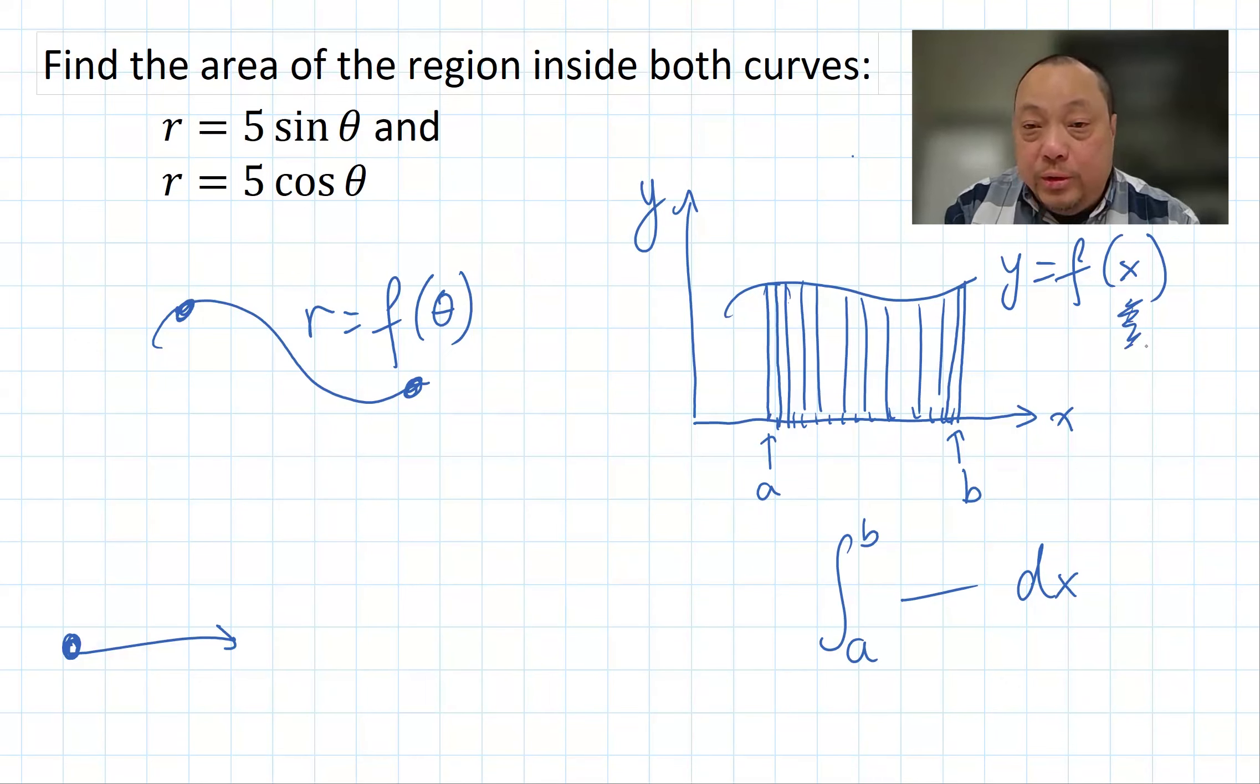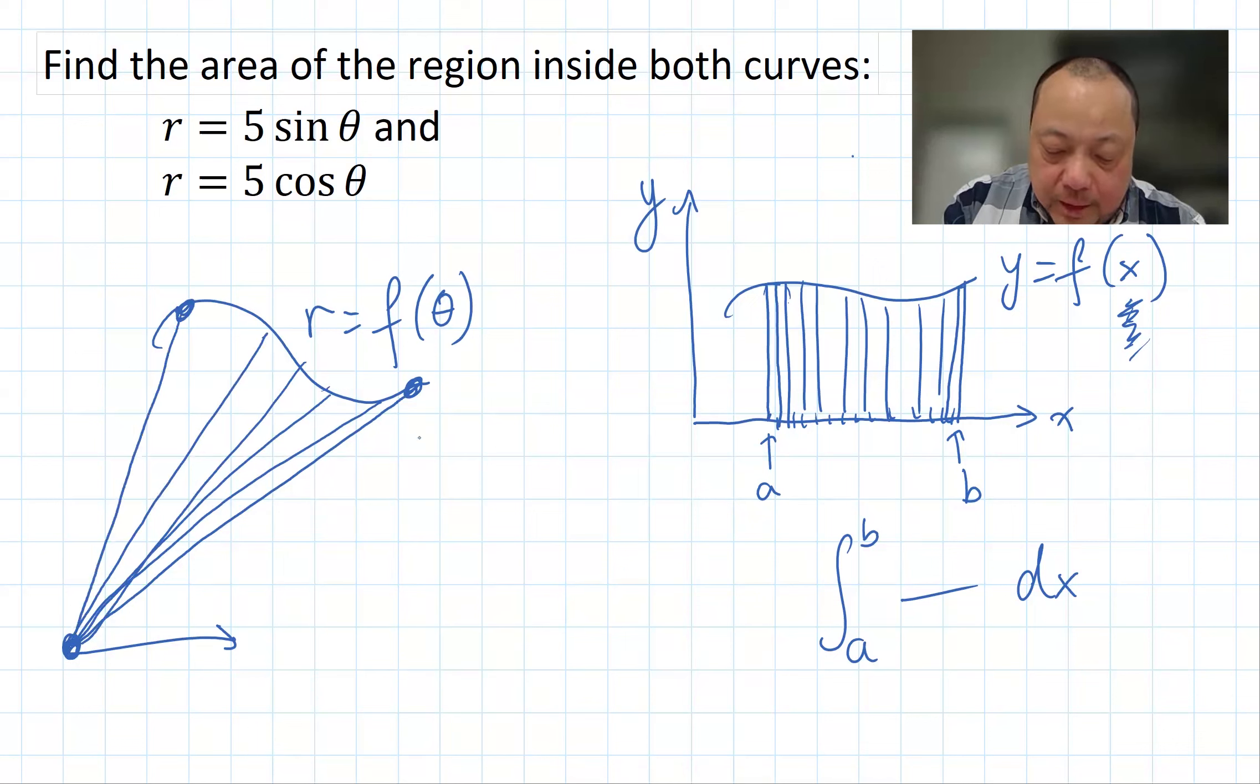What happens in polar coordinates when you have r equals f of theta, and you want the area from here to here? Before the variable is x, so you take the x and you slice it into small pieces. Now the variable is theta. So you take the angle theta and you slice it into small pieces, so it has tiny little thetas going from this theta 1 to this theta 2.